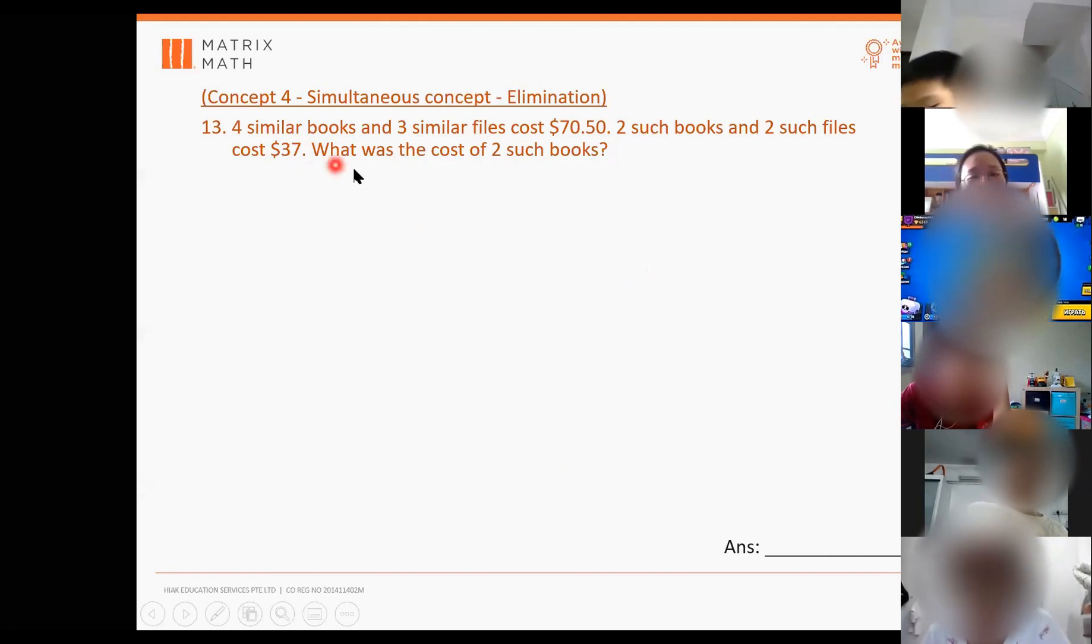So four books and three files cost $70.50. Two books and two files cost $37. Okay, so immediately, how do I record the data down first? What should I write? Four plus three equals $70.50. Four plus three? Just four plus three? I mean, four B plus three F. Yes. Very good.